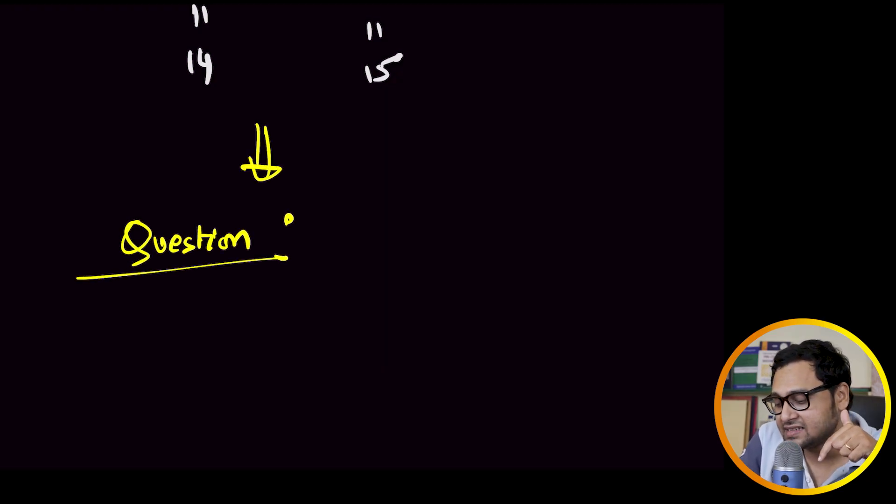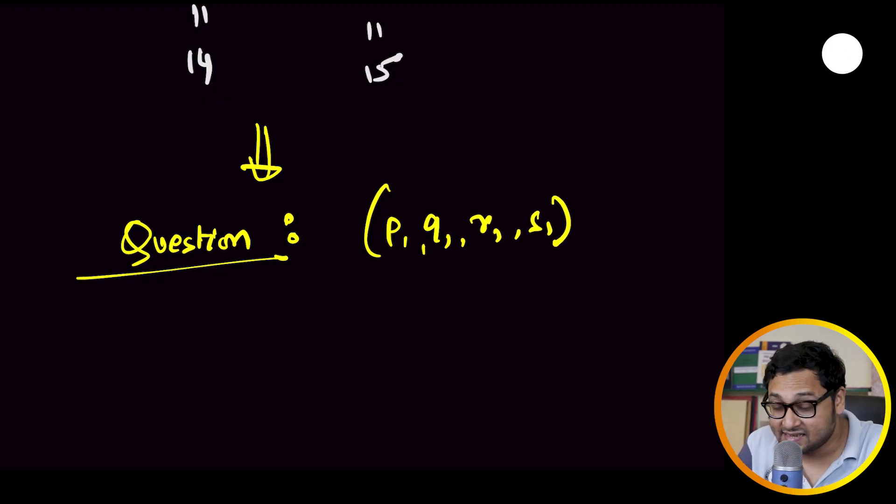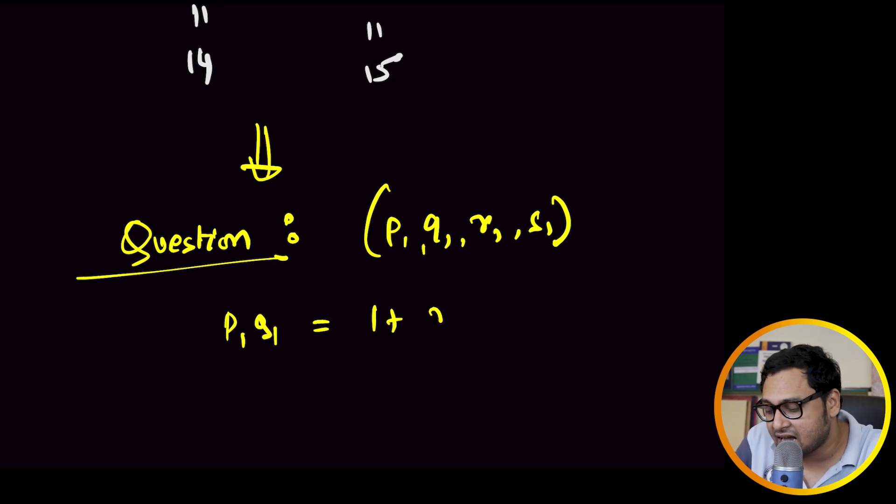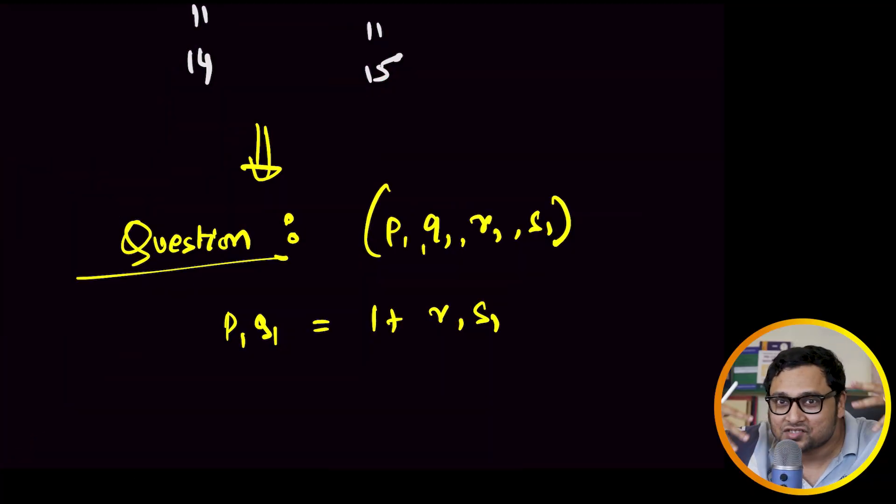The question is, can you describe all such quadruples of prime numbers, P1, Q1, R1, S1, all of them are prime, such that P1 times Q1 is equal to 1 plus R1 times S1. So they are consecutive. Can you find such quadruples of prime numbers? Here is a question. How many such quadruples of prime numbers are there, which satisfy this equality, this particular property, up to 100?